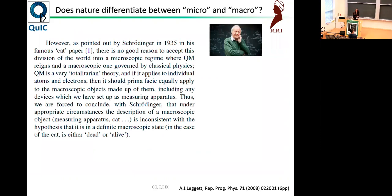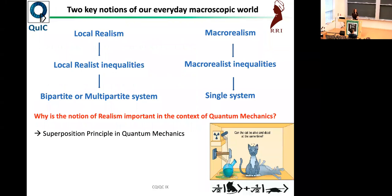Going on to now Tony Leggett, who asked this question, and it's a very interesting question. Does nature differentiate between micro and macro? This is a bit odd because quantum mechanics is a totalitarian theory. Why should something specifically apply to microsystems and not apply to macrosystems? There must be something we can do to reconcile these things. The Schrodinger cat is a very famous example of such reconciliation. This brings us to two key notions of our everyday macroscopic world. The first set is local realism, where we have the local realist inequalities.